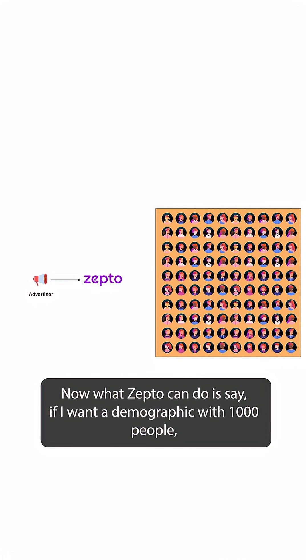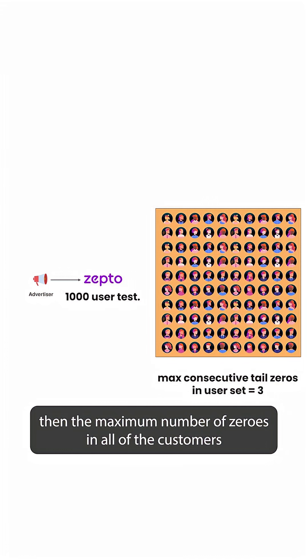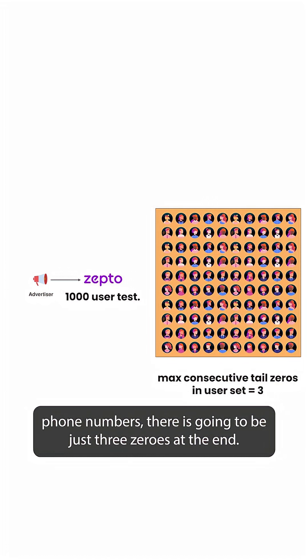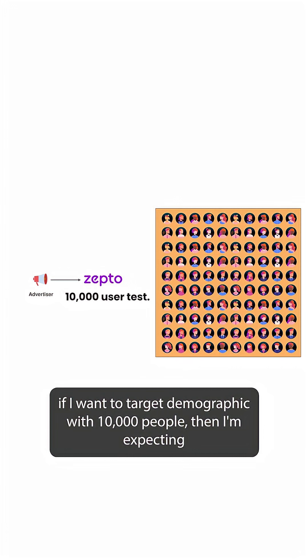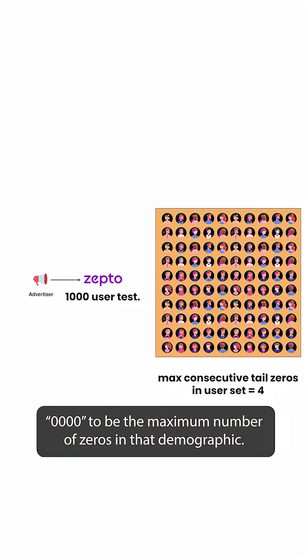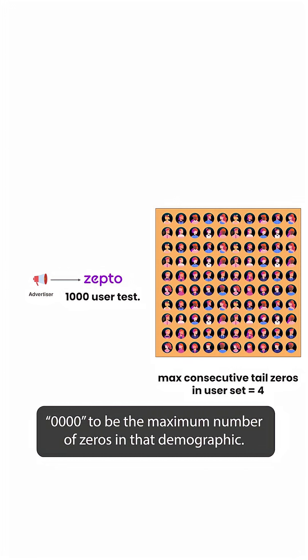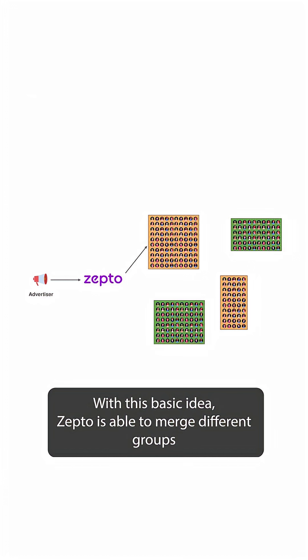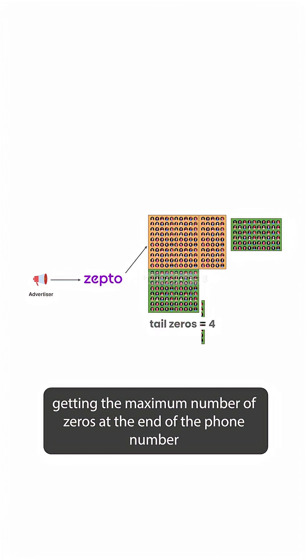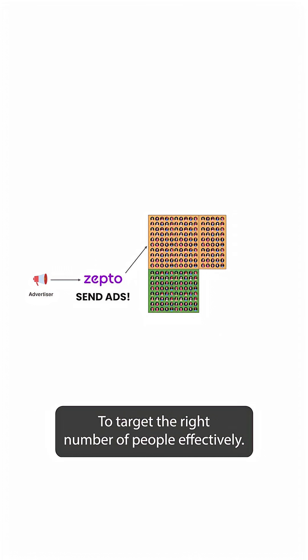Now what Zepto can do is say, if I want a demographic with 1,000 people, then the maximum number of zeros in all of the customers' phone numbers is going to be just three zeros at the end. If I want to target a demographic with 10,000 people, then I'm expecting four zeros to be the maximum number of zeros in that demographic. With this basic idea, Zepto is able to merge different groups together, getting the maximum number of zeros at the end of the phone number to target the right number of people effectively.